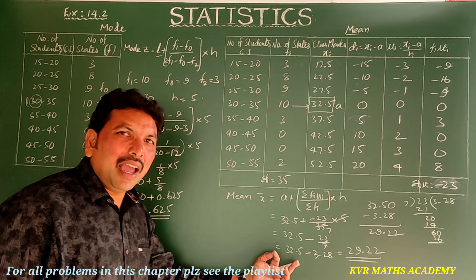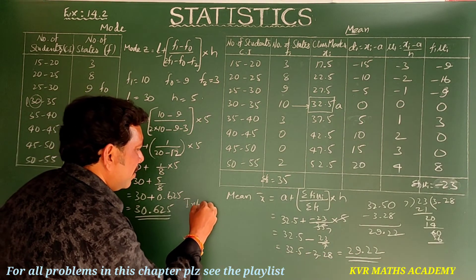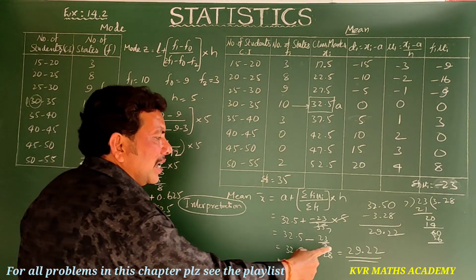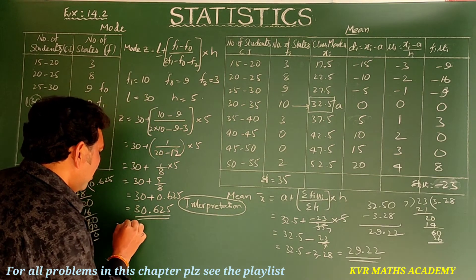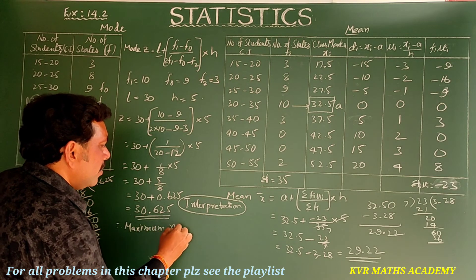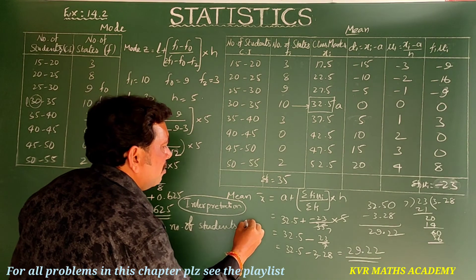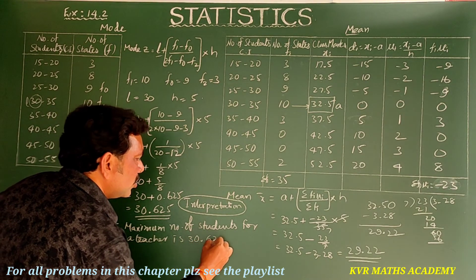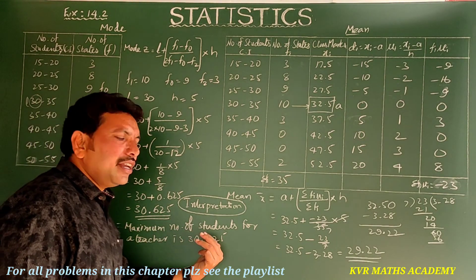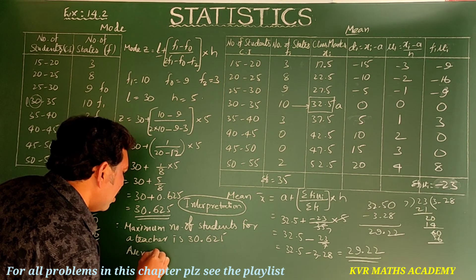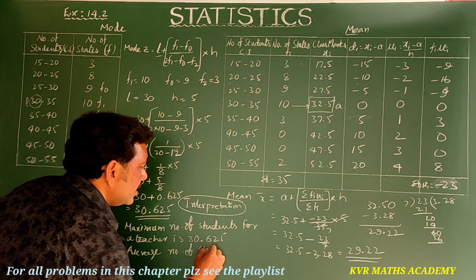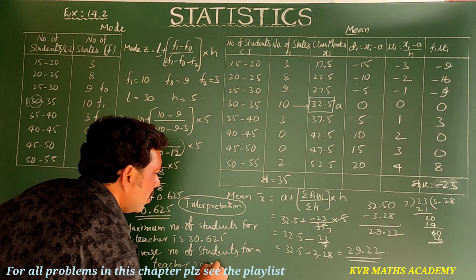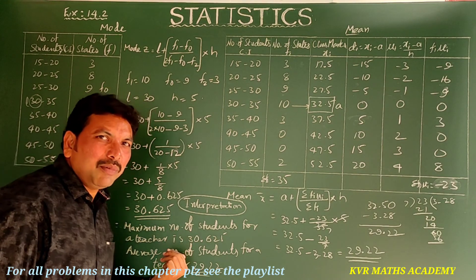Mode is 30.625 and mean is 29.22. Interpretation: the maximum number of students per teacher is 30.625 (this is the mode), and the average number of students per teacher is 29.22 (this is the mean).